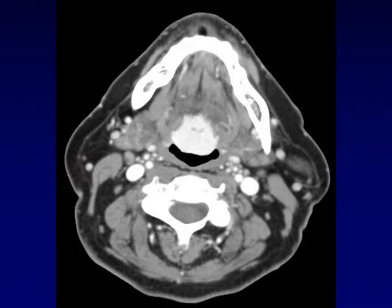Here's another congenital anomaly of thyroid development. We see an enhancing mass with imaging characteristics identical to that of the thyroid gland, but in an entirely unexpected location — at the base of the tongue. This thyroid gland never migrated; it grew at the base of the tongue and never went down the front of the neck. This is called a lingual thyroid. It will cause dysphagia, and the treatment is surgical — you can simply remove this ectopic tissue.